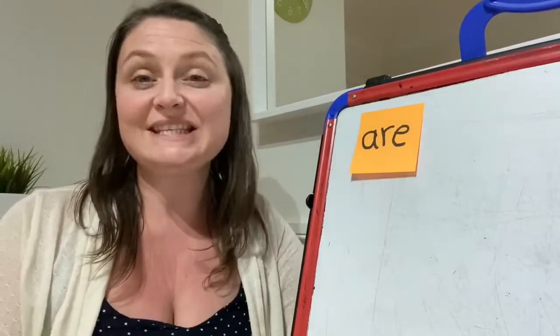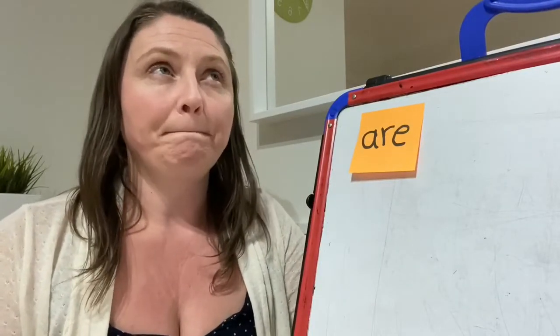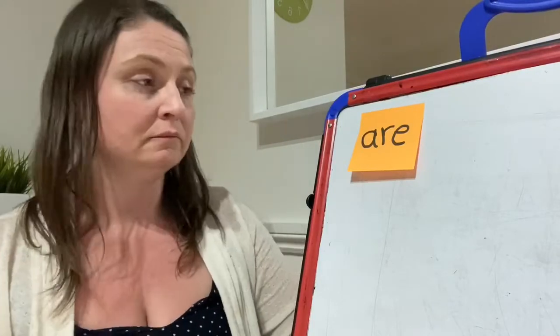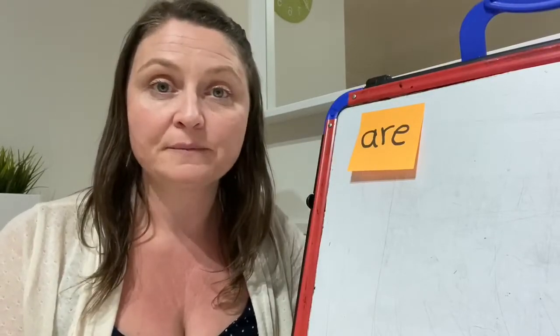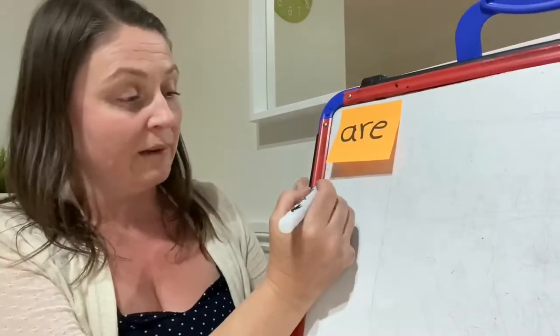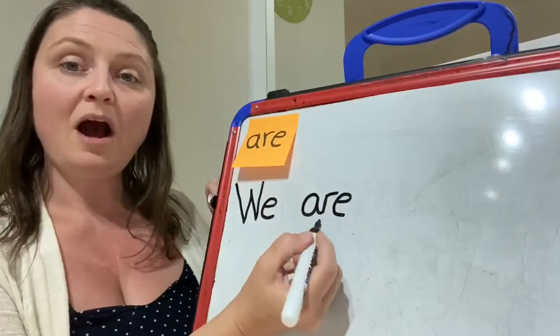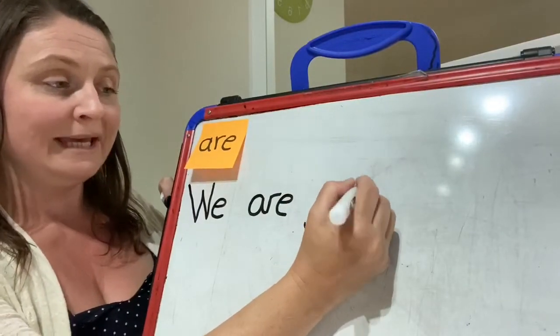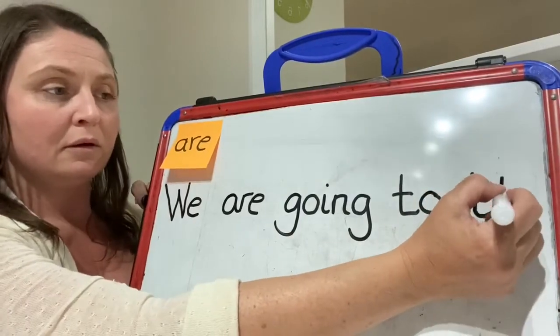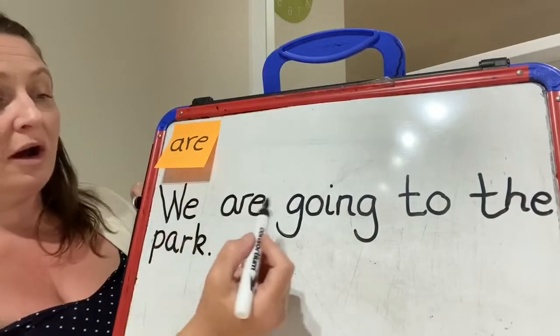I would like you to think of a sentence with your chosen tricky word in. So my tricky word is are. I'm thinking of a sentence with tricky word are. I've got one. We are going to the park. I'm going to write my sentence. We are going to the park. And my sentence actually starts with another tricky word, tricky word we. I must remember my capital letter. We are. That's my tricky word. We are going. Going. We are going to. Phase 2 tricky word. The park. P, ar, k. And I remember my full stop at the end. We are going to the park.